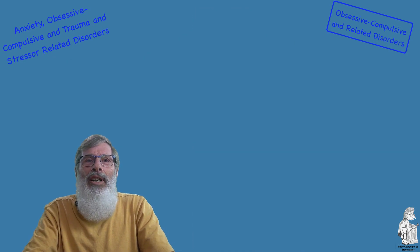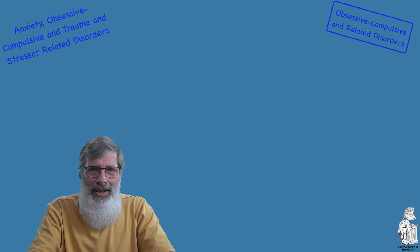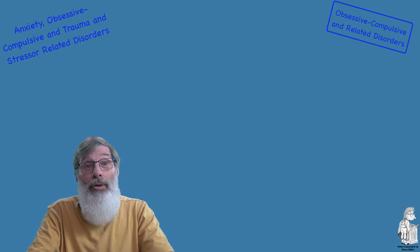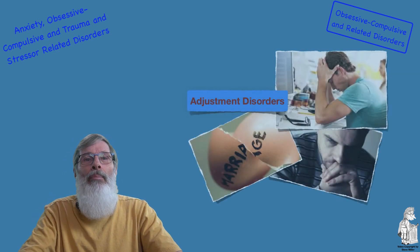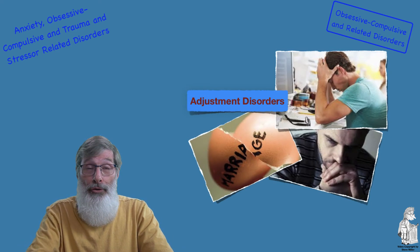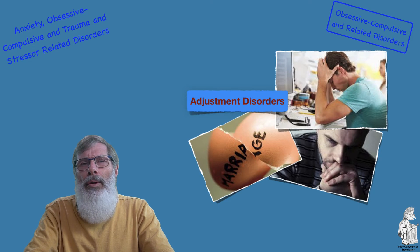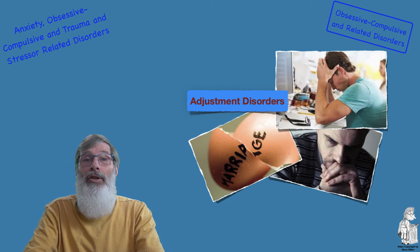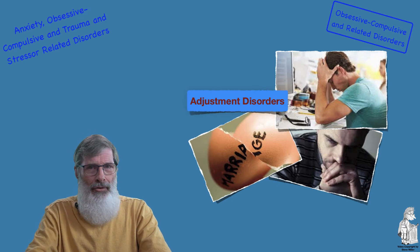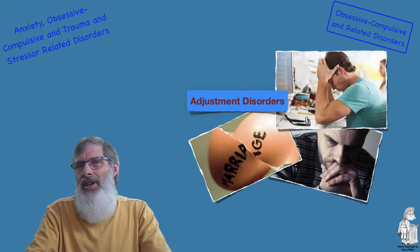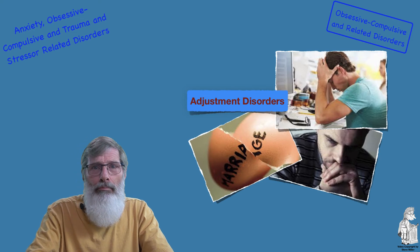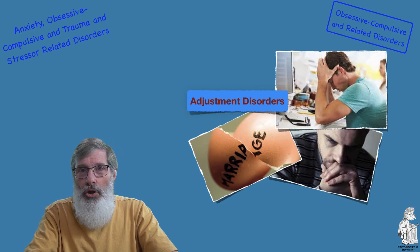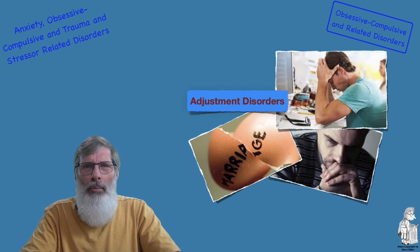Looking at trauma and stress-related disorders, there are two primary forms: adjustment disorder and acute and post-traumatic stress disorder, or PTSD. Adjustment disorders are among the mildest of psychological disorders — a maladaptive reaction to an identified stressor that develops within a few months of the onset of the stressor. The reaction is characterized by significant impairment in social, occupational, or academic functioning, or by states of emotional distress that exceed what is normally induced by stressors.